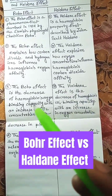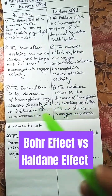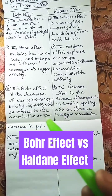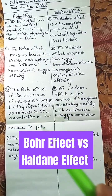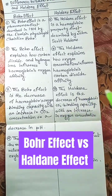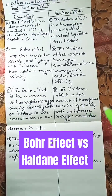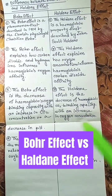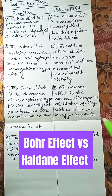The Bohr effect is the decrease of hemoglobin's oxygen binding capacity with an increase in CO2 concentration or a decrease in pH. The Haldane effect is the decrease of hemoglobin's CO2 binding capacity with an increase in oxygen concentration.